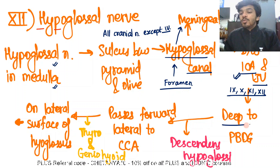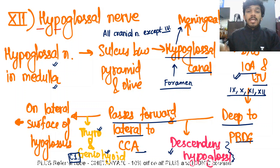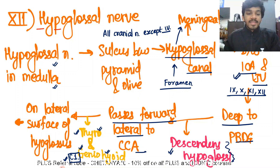It then goes deep to the posterior belly of digastric, where a branch called the descendens hypoglossi is given. The descendens hypoglossi forms the superior root of the ansa cervicalis. It further passes forward lateral to the common carotid artery, where it has two branches: the thyrohyoid and the geniohyoid. These are actually branches of C1 which have joined the hypoglossal nerve and piggybacked on it to reach the respective muscles. The hypoglossal nerve fibers have nothing to do with supplying the thyrohyoid and geniohyoid — it is C1 that supplies them.